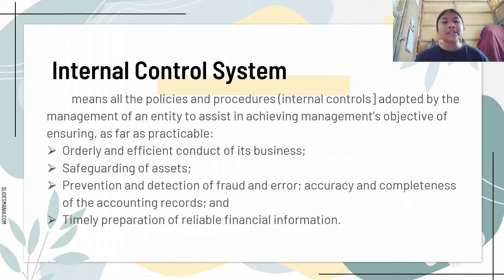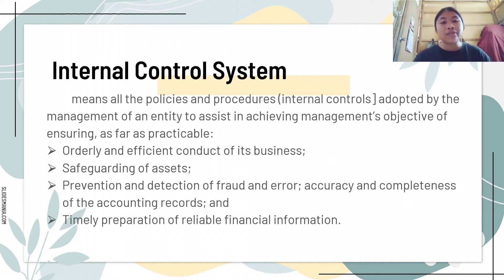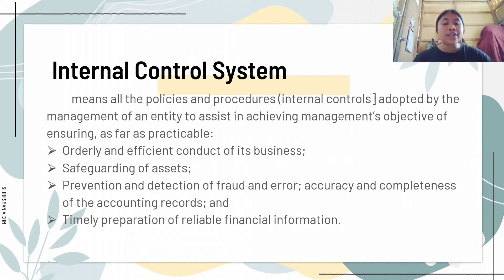Management also has a responsibility to provide timely and accurate financial information to shareholders and potential investors. That is why the internal control system, which is an accounting system, means all policies and procedures or internal controls adapted by the management of the entity to assist in achieving management's objectives of ensuring orderly and efficient conduct of its business, safeguarding of assets, prevention and detection of fraud and error, accuracy and completeness of accounting records, and timely preparation of reliable financial information. The internal control system goes beyond those matters which directly relate to the functions of the accounting system.